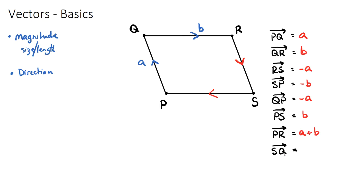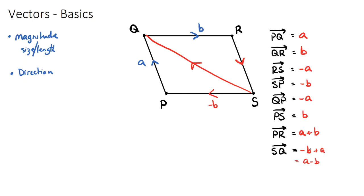For S to Q, we need to go from S to P and then P to Q. We could also go S to R and then R to Q and get the same answer. Going via S to P first: S to P is negative b. Then from P up to Q we add vector a. So S to Q equals negative b plus a, which we can write as a minus b, since the rules for adding and subtracting vectors work just like numbers.